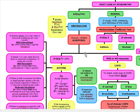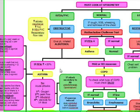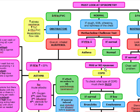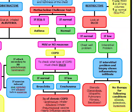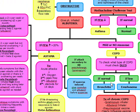If after the trial of albuterol there is a mild or no response, we've made our diagnosis of COPD. To determine what type of COPD it is, we perform a DLCO. If the DLCO is normal, the diagnosis is chronic bronchitis. If the DLCO is low, the diagnosis is emphysema.